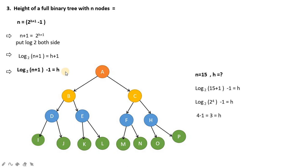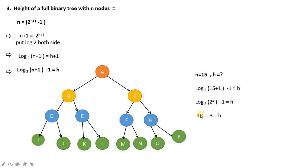For example, if we count the nodes and n = 15, we can find the height using: h = log₂(n+1) - 1 = log₂(15+1) - 1 = log₂(16) - 1. Now 16 = 2^4, so log₂(16) = 4. Therefore h = 4 - 1 = 3. So the height of the full binary tree with 15 nodes is 3.